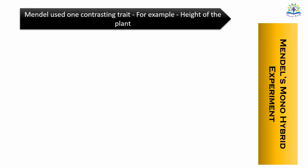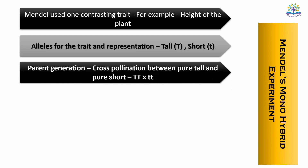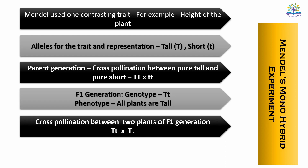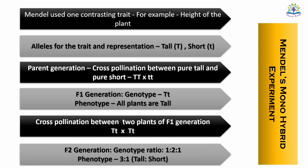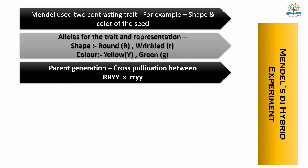Now let's see the key points for the question on Mendel's monohybrid experiment. Mendel used one contrasting trait, for example height of the plant. Include the alleles for the trait and their representation. In the parent generation, cross-pollination was done between pure tall and pure short plants. The resultant F1 generation had genotype uppercase T, lowercase t, and the phenotype was all plants tall. In the next step, cross-pollination between two F1 plants gave the F2 generation with genotype ratio 1:2:1 and phenotype ratio 3:1. For a long answer, include the steps showing how you get these ratios. Similarly, you can write the answer for Mendel's dihybrid experiment.